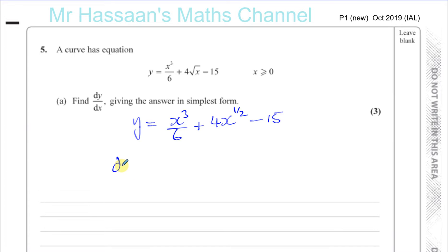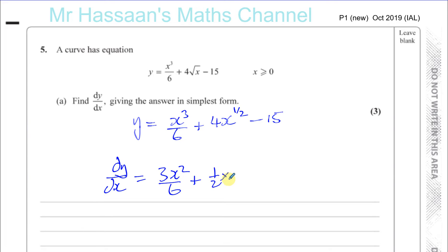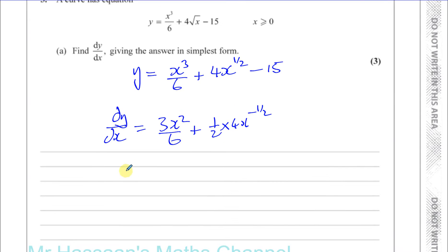So dy/dx — remember when you differentiate, you multiply by the power and take 1 from the power. So we get 3 times x squared over 6, plus a half times 4x to the power of minus a half. A constant, when you differentiate, becomes 0.